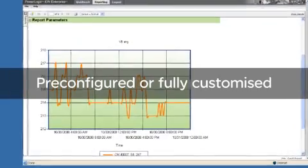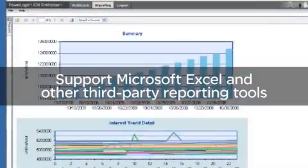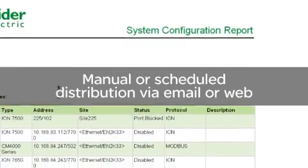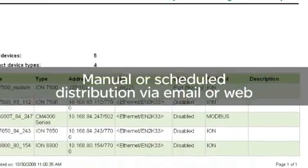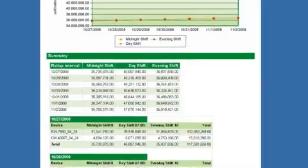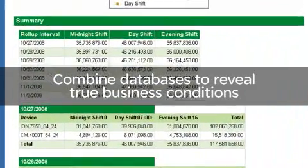Ion Enterprise reporting can be pre-configured or fully customized to meet your needs. It supports Microsoft Excel and other third-party reporting tools. You can distribute reports manually or automatically through scheduled distribution using email or the web. You can even combine databases for analysis to reveal true business conditions.